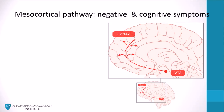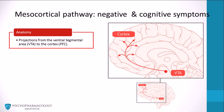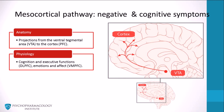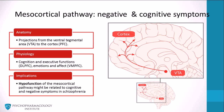A number of investigators propose that negative and cognitive symptoms of schizophrenia are associated with hypofunction of the mesocortical pathway. This tract is made up of dopaminergic neurons that project from the ventral tegmental area to the prefrontal cortex. The mesocortical pathway is thought to be relevant to the physiology of cognition and executive function, mainly the dorsolateral prefrontal cortex, and emotions and affect, mainly the ventromedial prefrontal cortex. Thus, hypofunction of the mesocortical pathway might be related to cognitive and negative symptoms of schizophrenia.